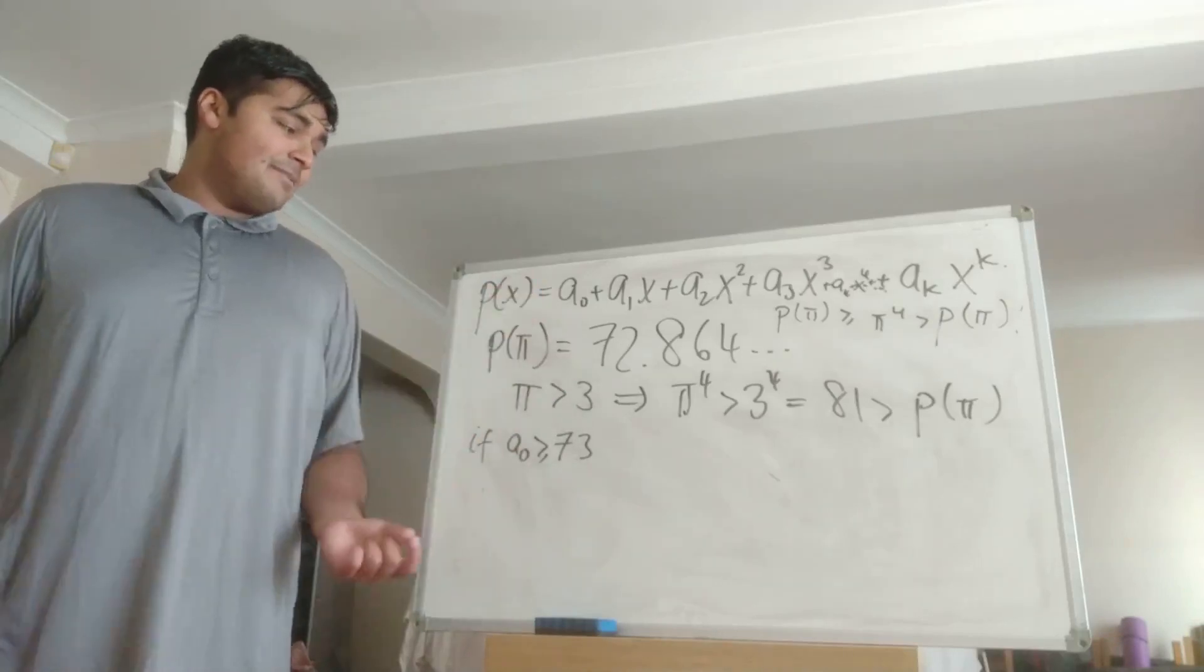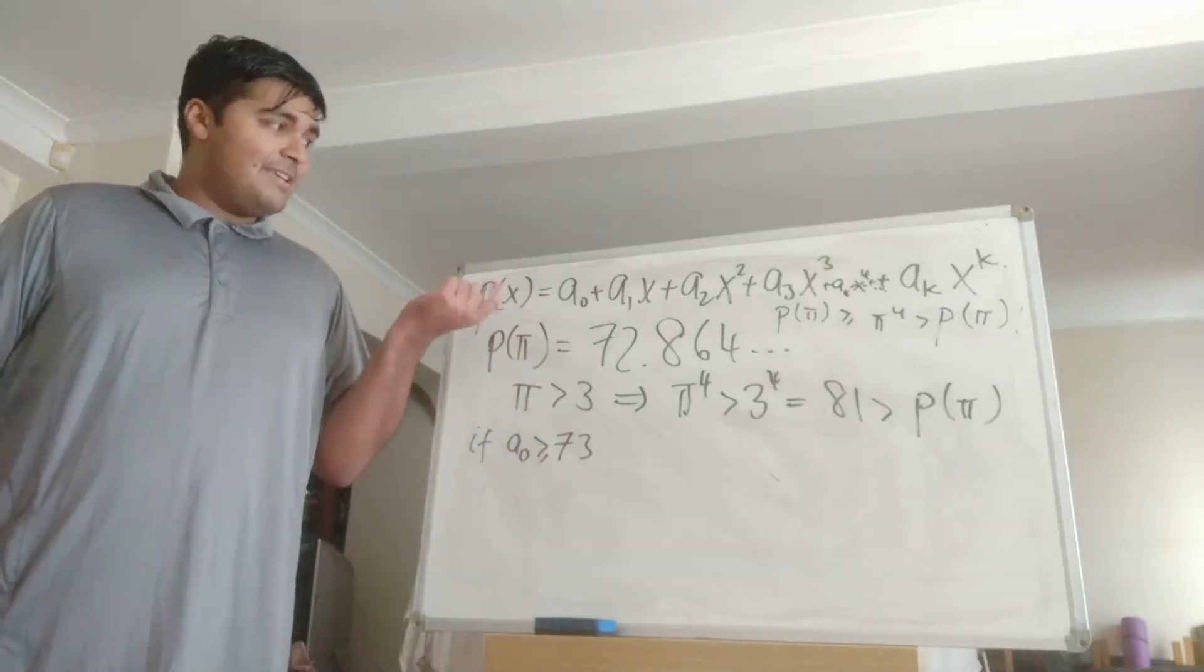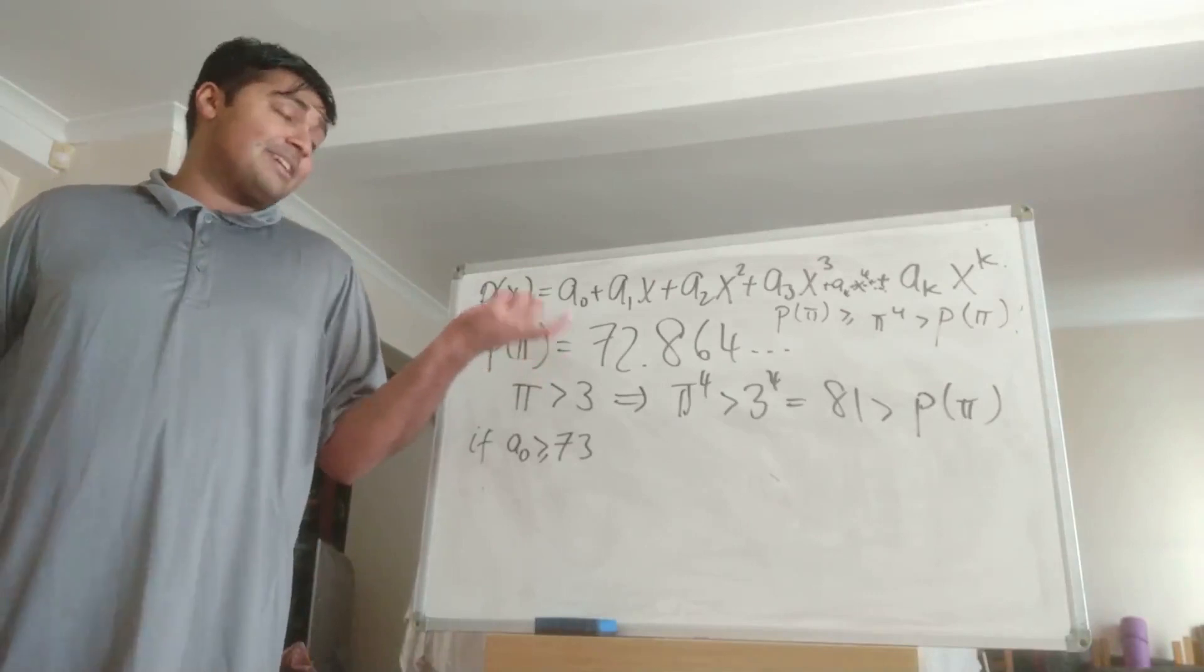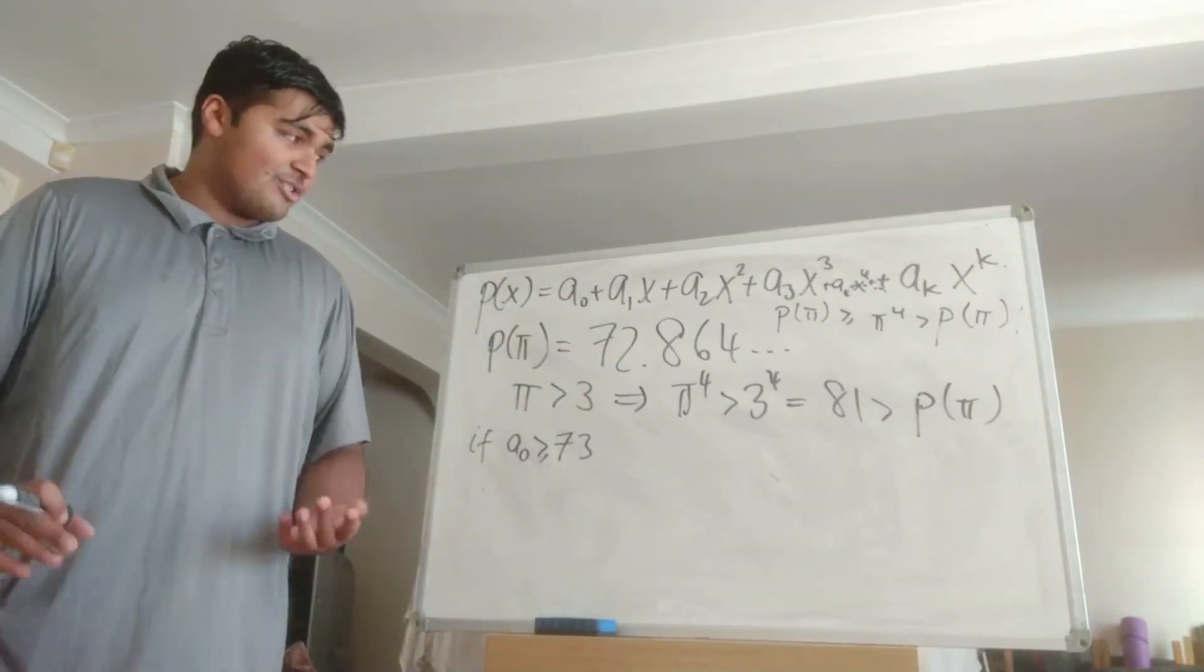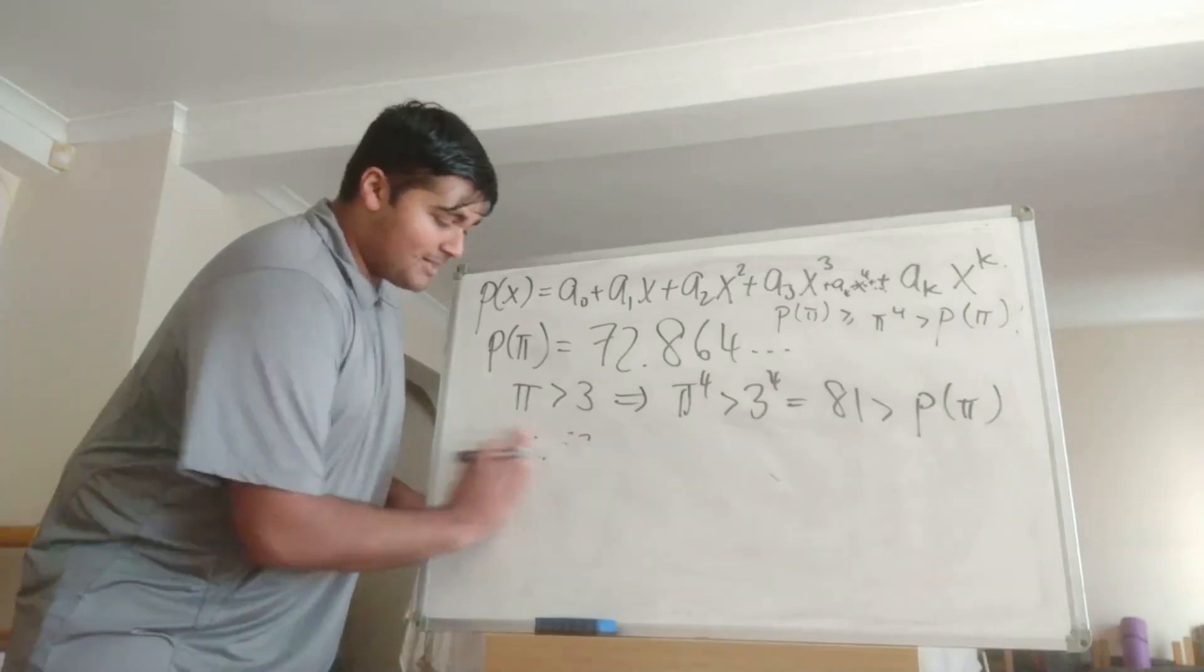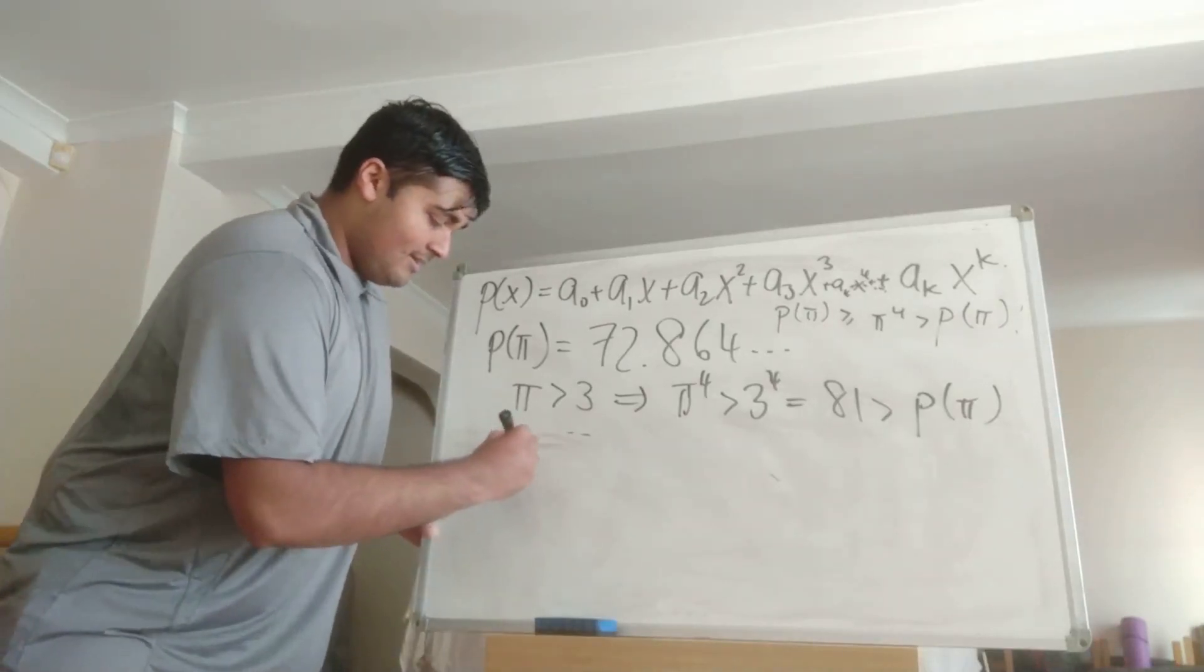So if a_0 was bigger than or equal to 73 then P(pi) would be bigger than or equal to 73 which is strictly greater than P(pi) and that's a contradiction. So that tells us that a_0 must be at most 72.